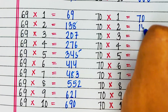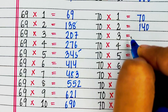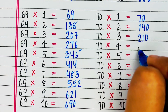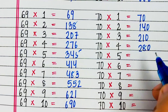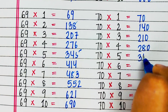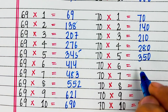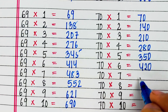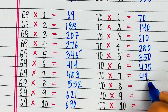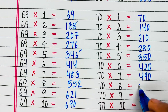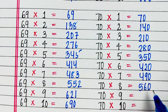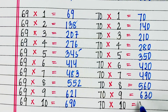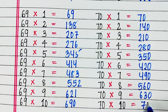Next is table of 70. 70 1s are 70, 70 2s are 140, 70 3s are 210, 70 4s are 280, 70 5s are 350, 70 6s are 420, 70 7s are 490, 70 8s are 560, 70 9s are 630, 70 10s are 700.